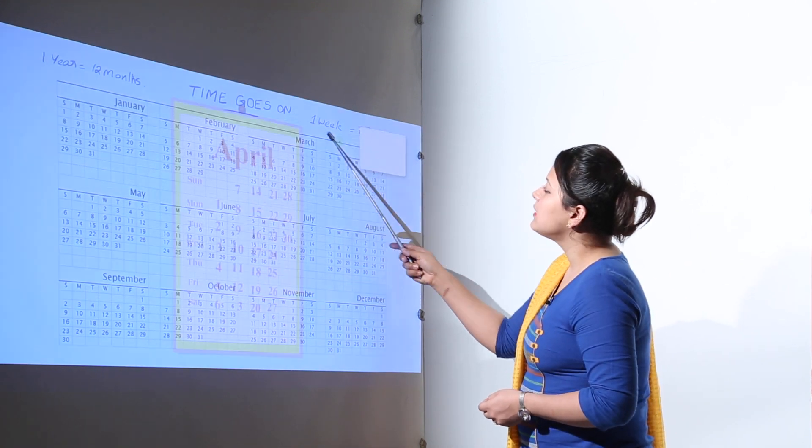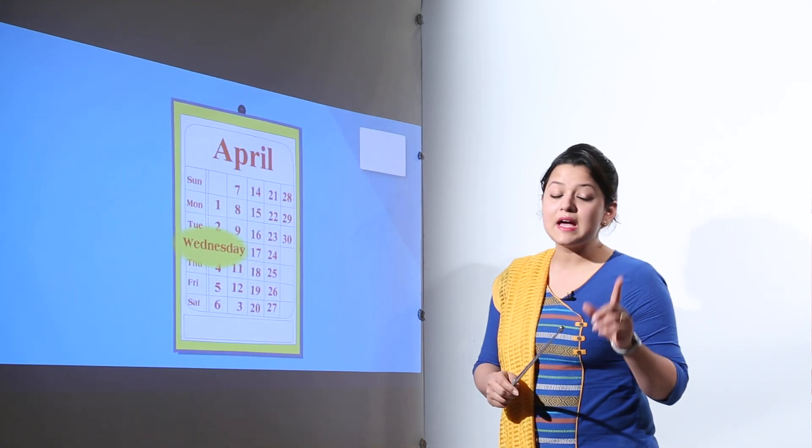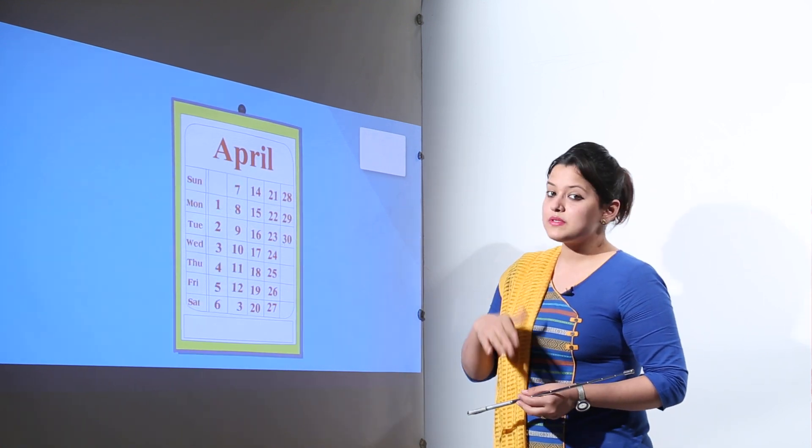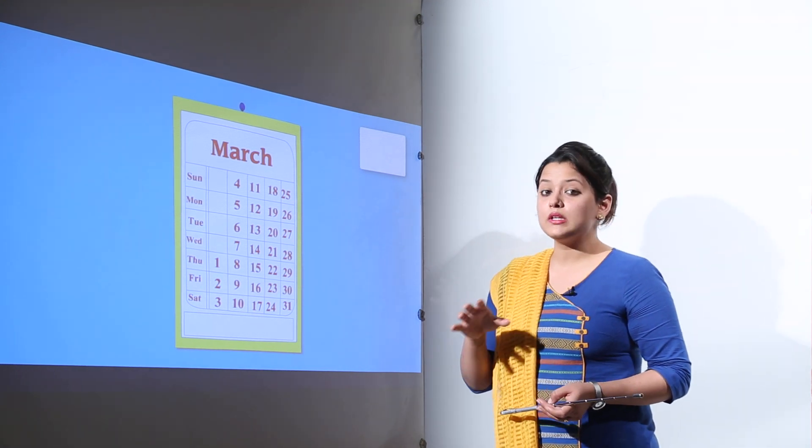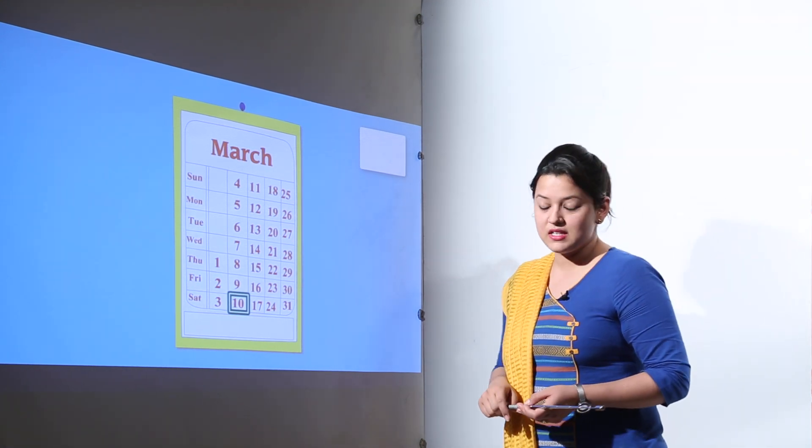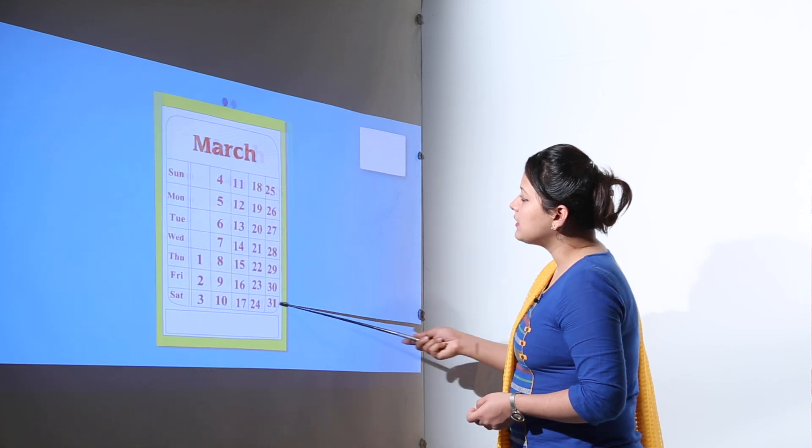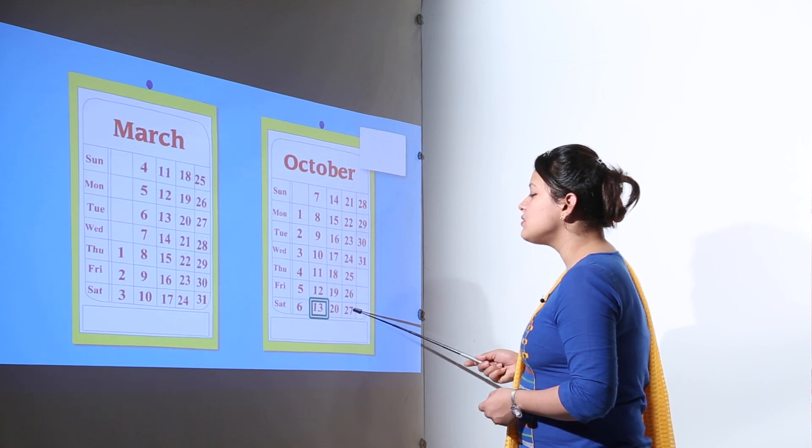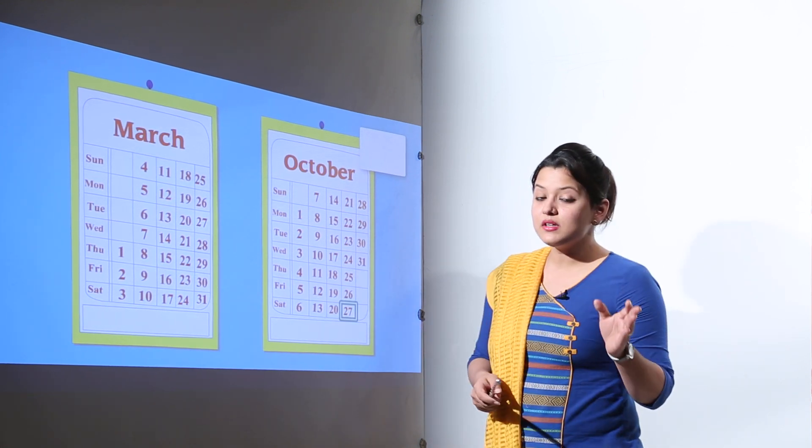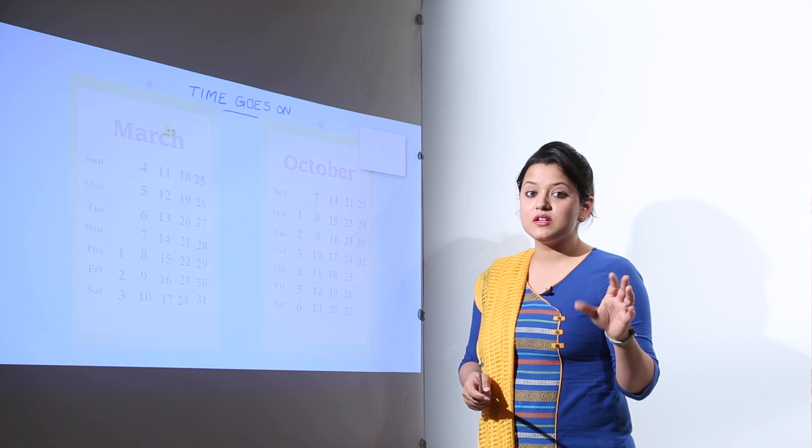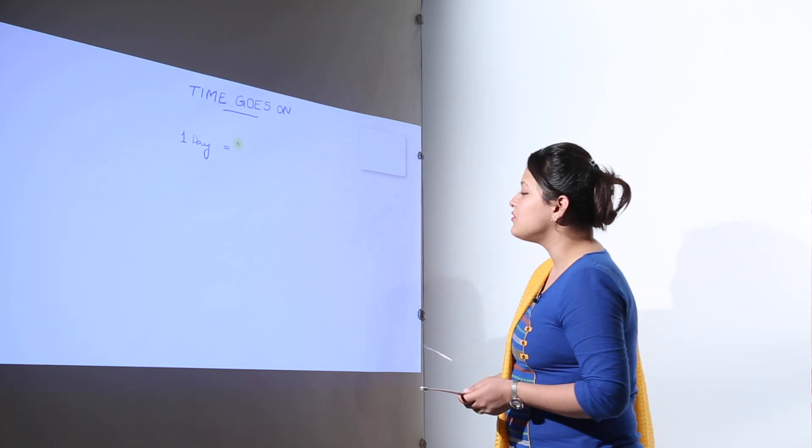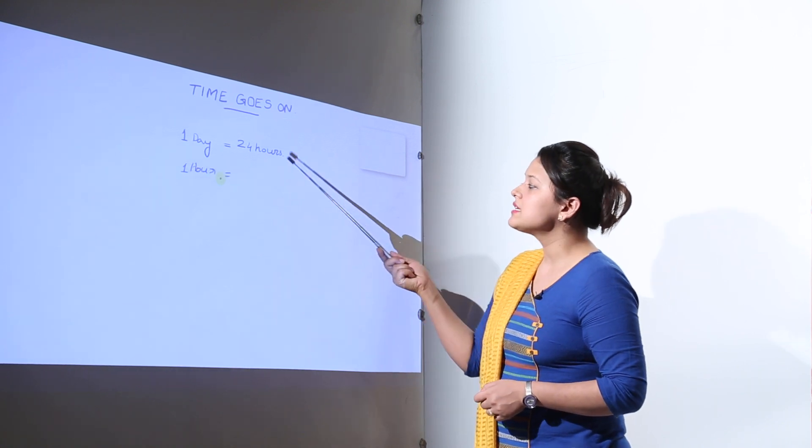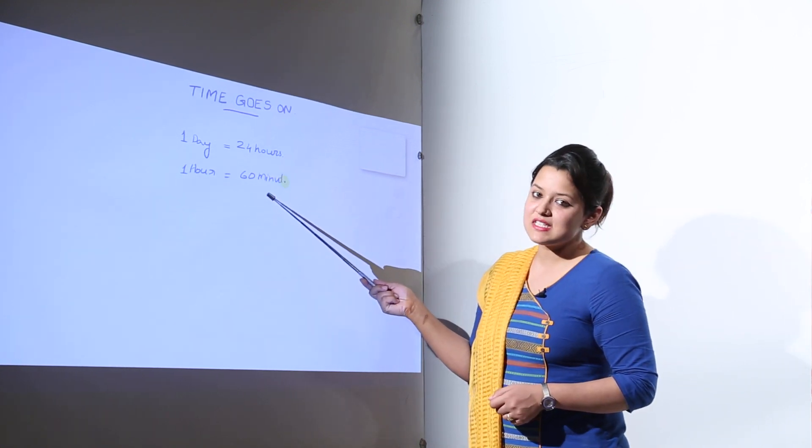So we know that there is one week and one week has seven days. So you can see over here, it can start from Saturday or Sunday, but in total it is always having seven days. So you can count the number of Saturdays in March. We have five Saturdays in March and we have only four Saturdays in October. So similarly the number of Saturdays or days in any month can change. So now we know that one day has 24 hours and one hour has how many minutes? 60 minutes.